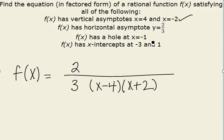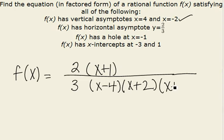f(x) has a hole at x=-1. Well, if there's a hole, that means we were able to cancel something in the top and bottom. So we'll have an x+1 in the top and an x+1 in the bottom.